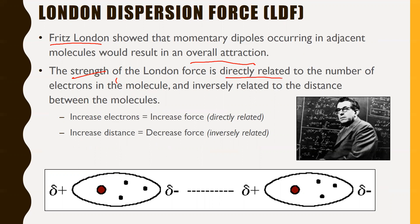The strength of the London dispersion force is directly related to the number of electrons in the molecule, and inversely related to the distance between molecules. The more electrons you have, the more powerful the London dispersion force. Increasing the distance between molecules will decrease the force — similar to how moving magnets farther apart decreases the force between them.